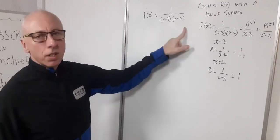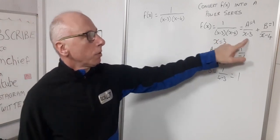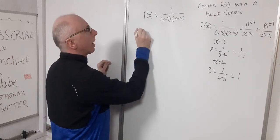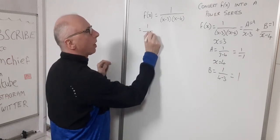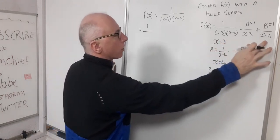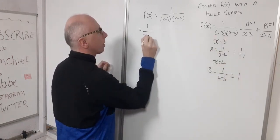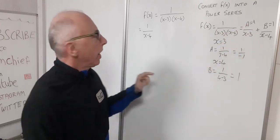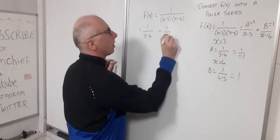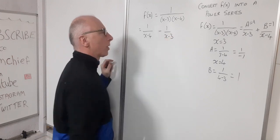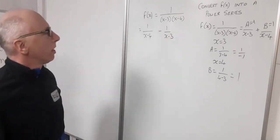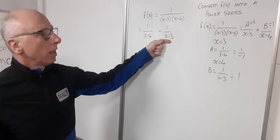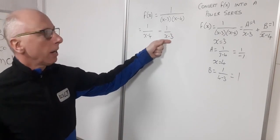Now let's rewrite our function in terms of partial fraction decomposition. So f(x) now equals 1 / (x-4) — bringing the positive term first — and then we subtract, because A is -1, giving minus 1 / (x-3). So our method is to make a power series out of each of these two terms.